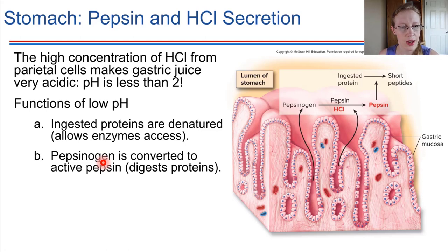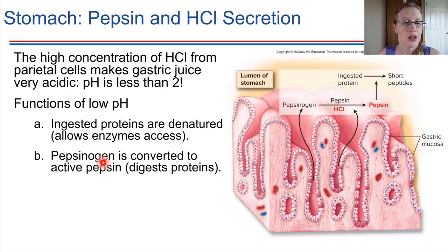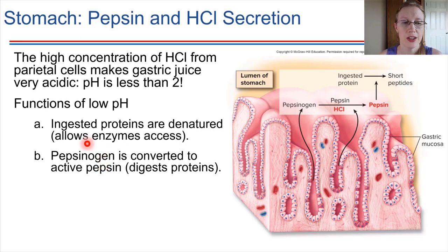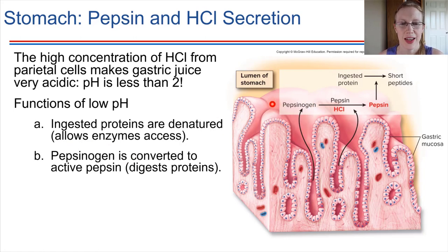The enzyme involved in protein digestion is pepsin. This brings us back to the chief cells — chief cells produce pepsinogen, which is the precursor for this enzyme.